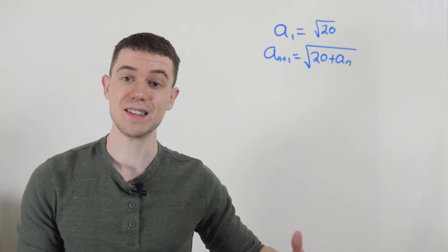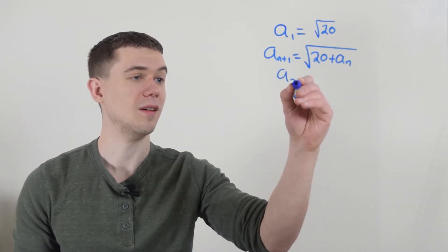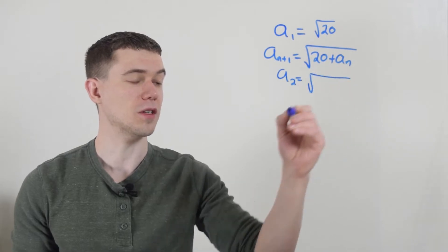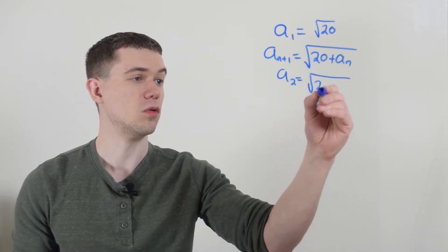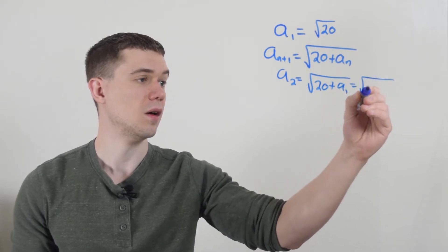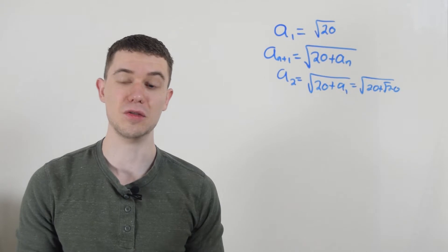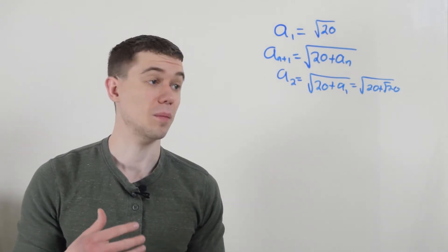So if you wanted to list all the terms of this sequence, well, I have a_1, a_2, I just follow this pattern. a_2 is 20 plus a_1, and a_1 is root 20. So the second term of the sequence would be root 20 plus root 20.